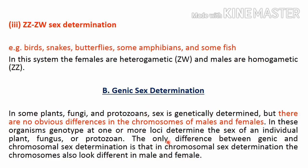The only difference between genic and chromosomal sex determination is that in chromosomal sex determination there are two different types of chromosomes in males and females, whereas in genic sex determination all chromosomes of both males and females are the same. The genes play a definite role in the segregation of sex.